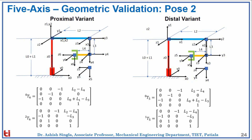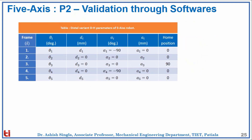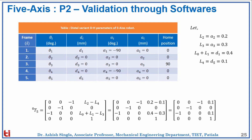Now let's move to pose 2 of the 5-axis robot. We can see the 5-axis geometric validation of pose 2 in both variants, and the end result will be the same. Using the distal variant DH parameter table and assumed values, putting them into the transformation matrix gives this resultant matrix.